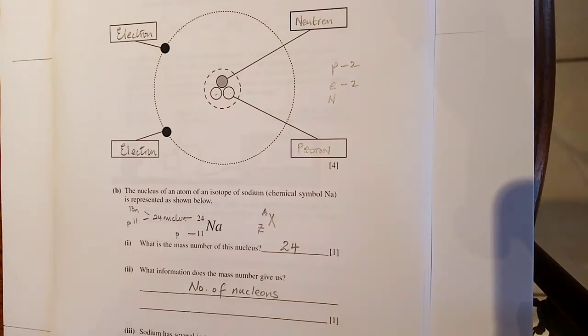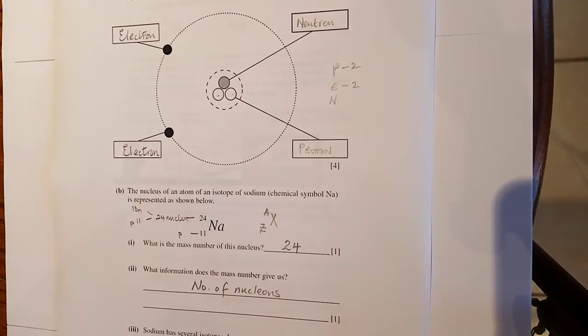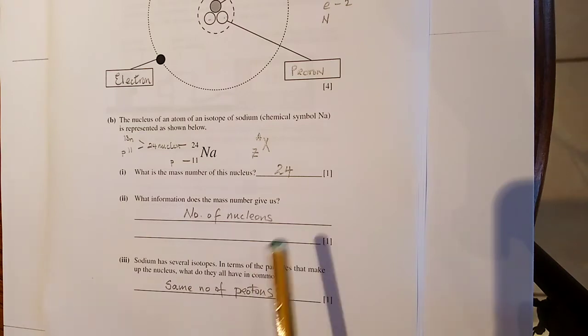What's the mass number of this nucleus? A cross zebra. Atomic mass, atomic number, mass number. So it's 24. What information does the mass number give us? Number of nucleons. Sodium has several isotopes. In terms of the particles, what makes up a nucleus? What do they have in common? So the isotope, same atomic number. So what's it asking here? In terms of particles. Same number of protons.